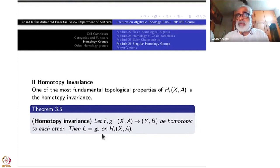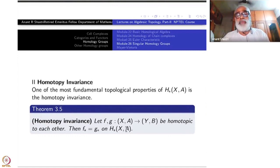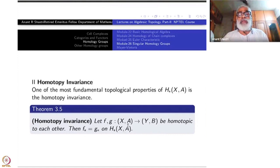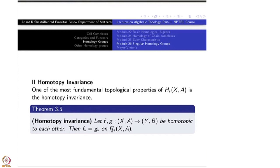We are stating this in terms of maps rather than spaces, which is a stronger result. From this, if f from (X,A) to (Y,B) has a homotopy inverse g, then f∘g is homotopic to the identity, so f* ∘ g* equals the identity, meaning f* is the inverse of g*. The homotopy invariance of spaces follows from the homotopy invariance of maps.